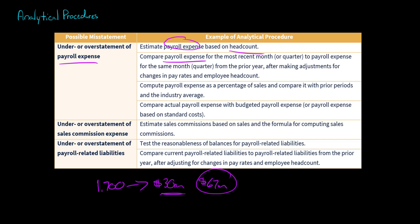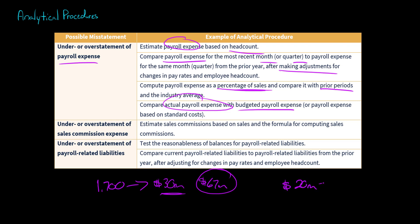The auditor could also compare payroll expense for the most recent month or quarter to payroll expense for the same month or quarter from the year before, after making adjustments for any changes in pay rates or employee head count. The auditor could also compare payroll expense as a percentage of sales and compare that figure with prior periods or the industry average. Additionally, the auditor could compare actual payroll expense with budgeted amounts — for example, if the client budgeted $20 million but actual payroll was $50 million, that significant discrepancy would need investigation.